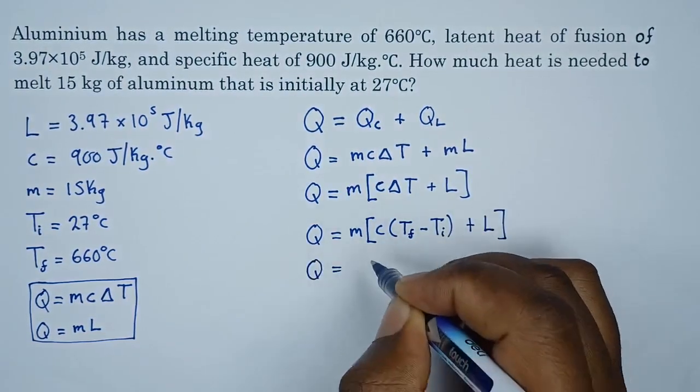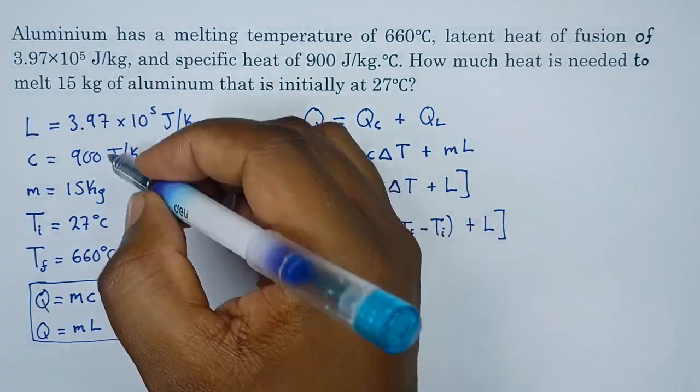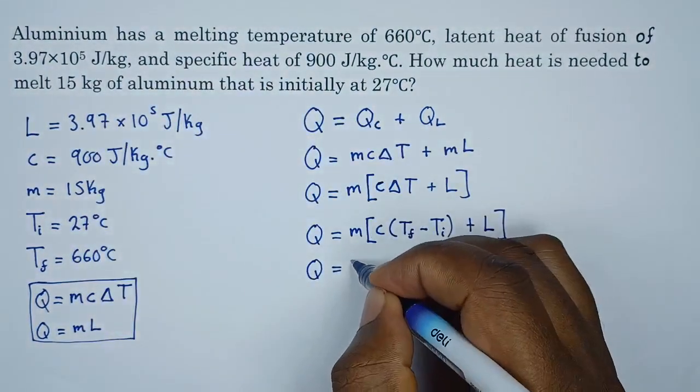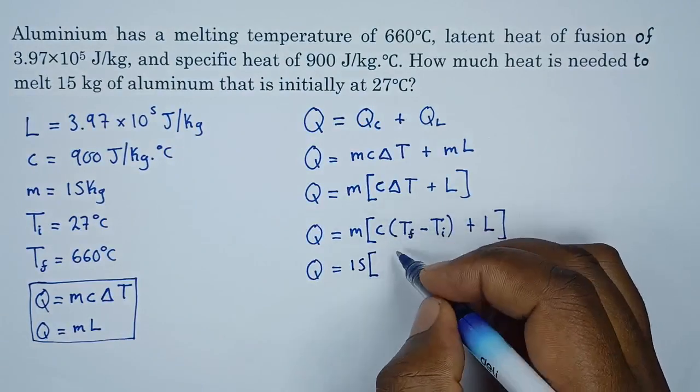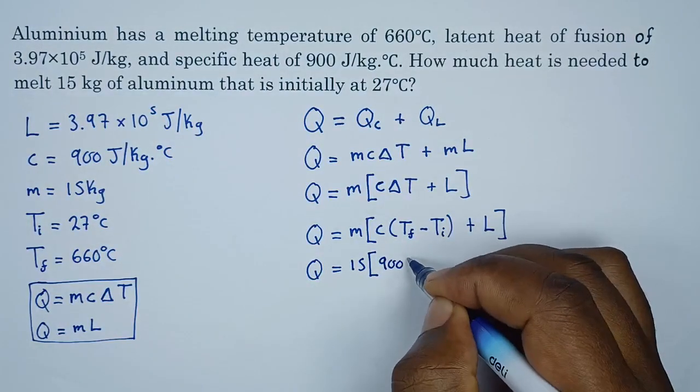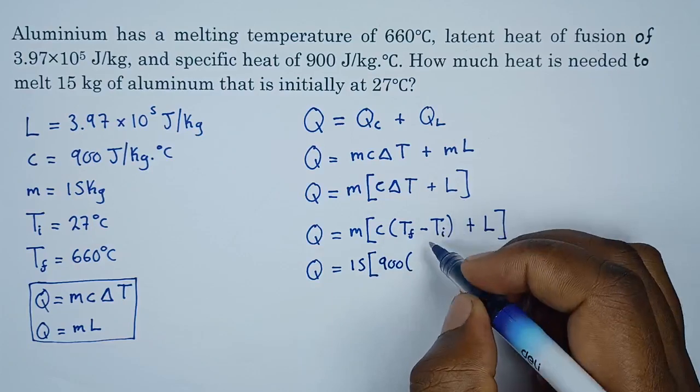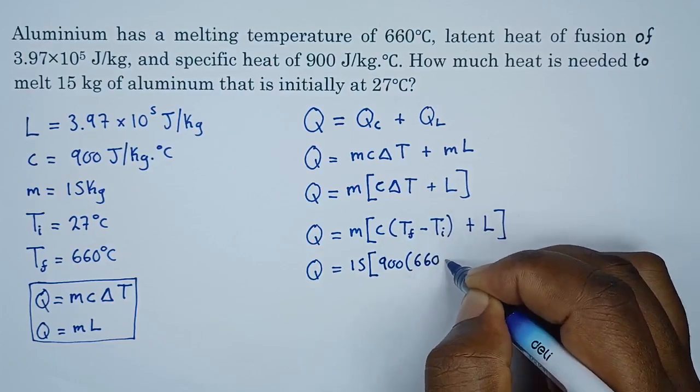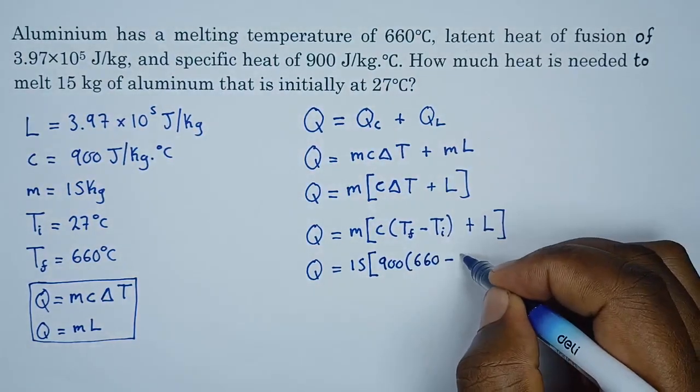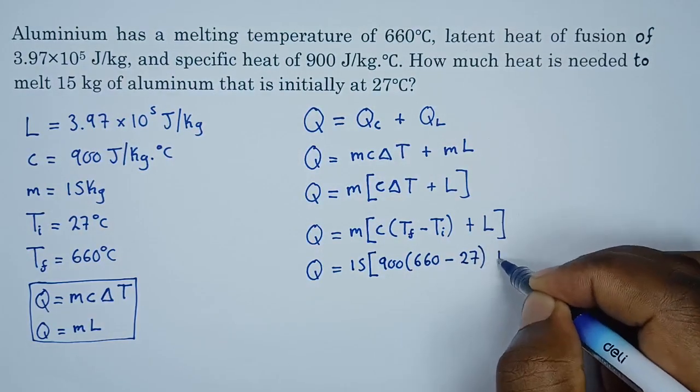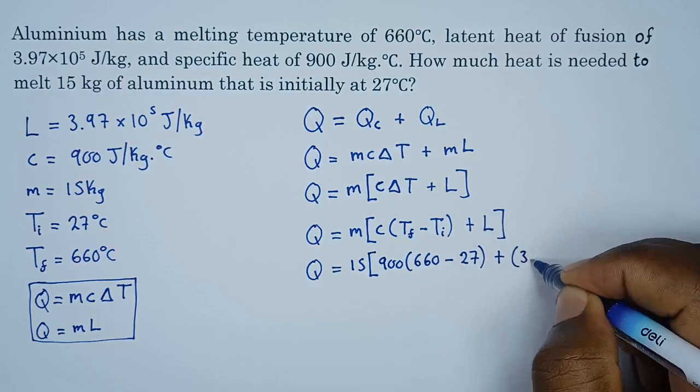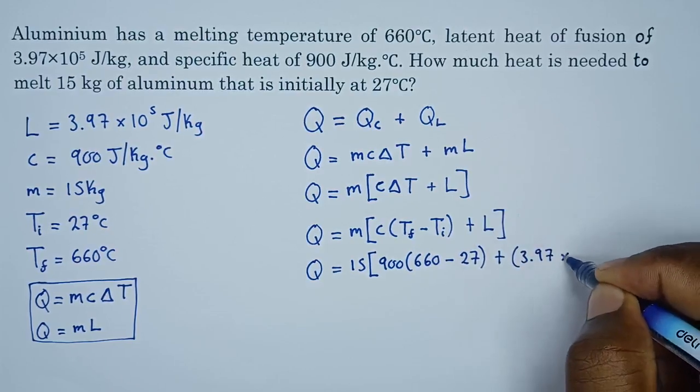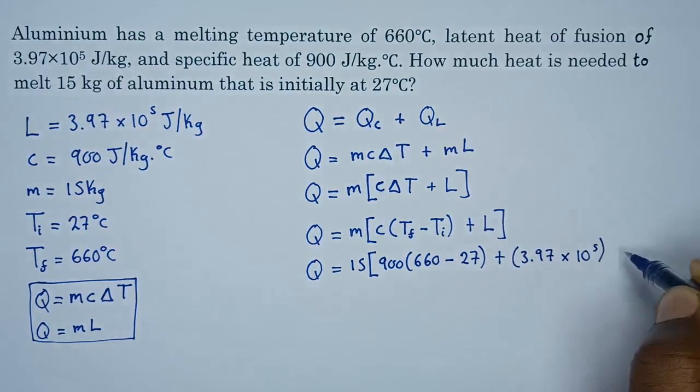Let's do the substitutions now. Mass we've been given, what is our mass? It's 15. Specific heat capacity we've been given 900, change in temperature, final temperature is 660 minus temperature initial 27, plus the latent heat which is 3.97 times 10 to the power 5.